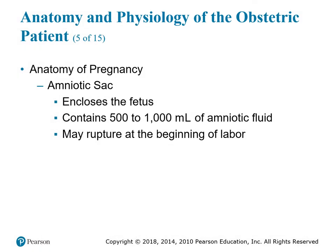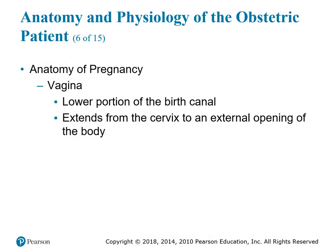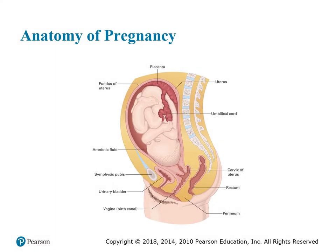The amniotic sac encloses the fetus, contains about 500 to 1000 mLs of amniotic fluid, and may rupture at the beginning of labor. The vagina, the lower portion of the birth canal, extends from the cervix to the external opening of the body. In the diagram, the umbilical cord is attached to the placenta, which is attached to the upper section of the uterus. There's also a mucus plug near the head, which is one of the first things seen as the head begins to be expelled.